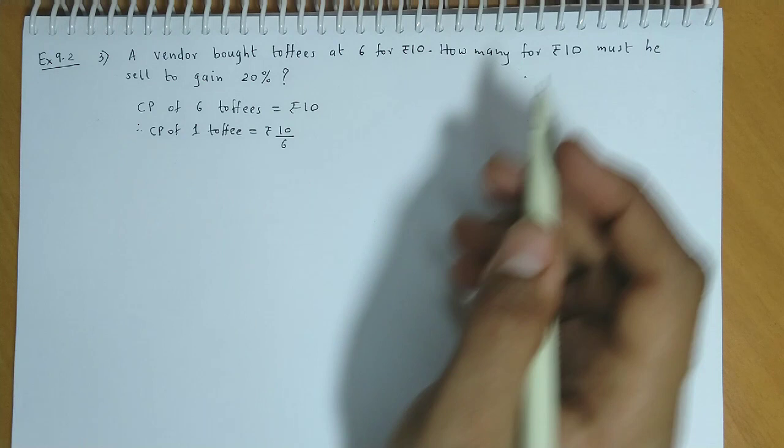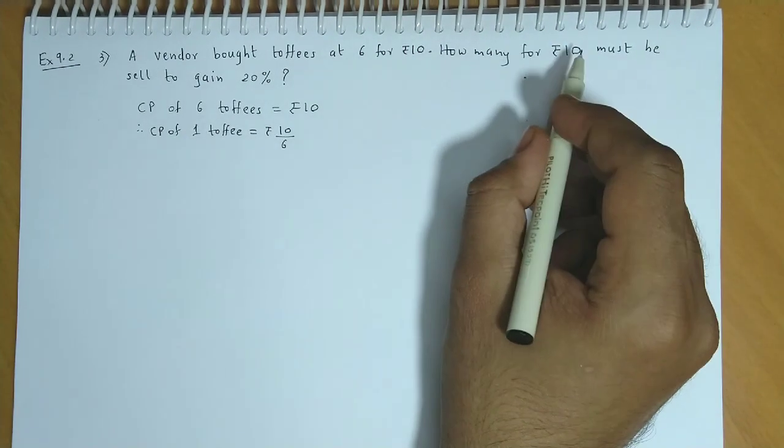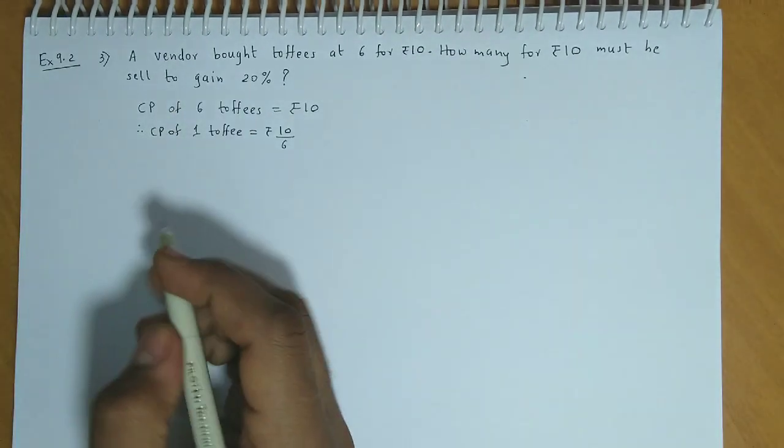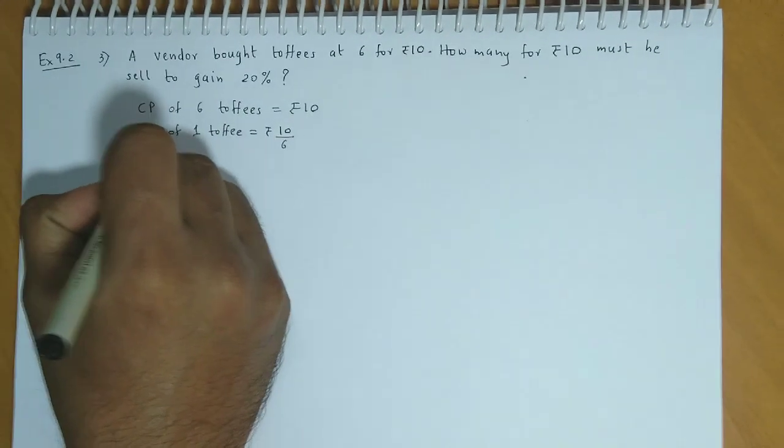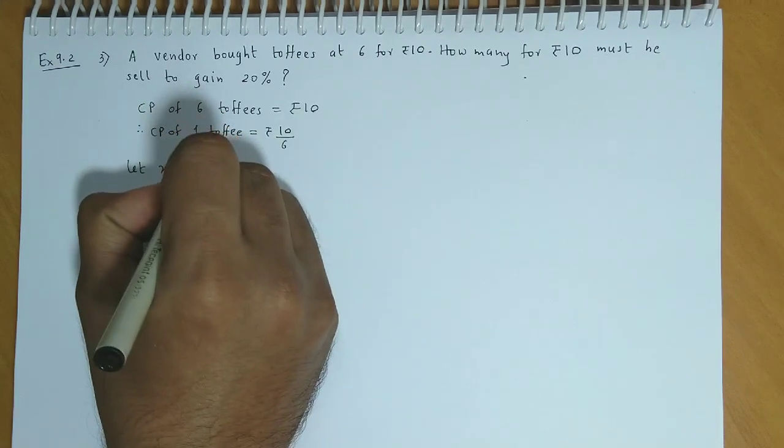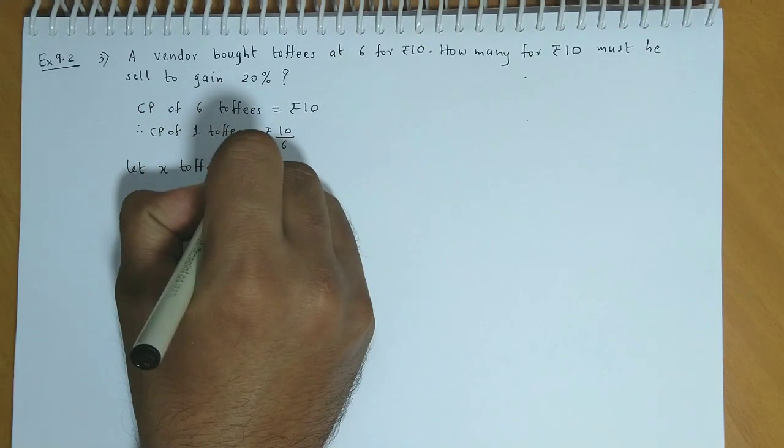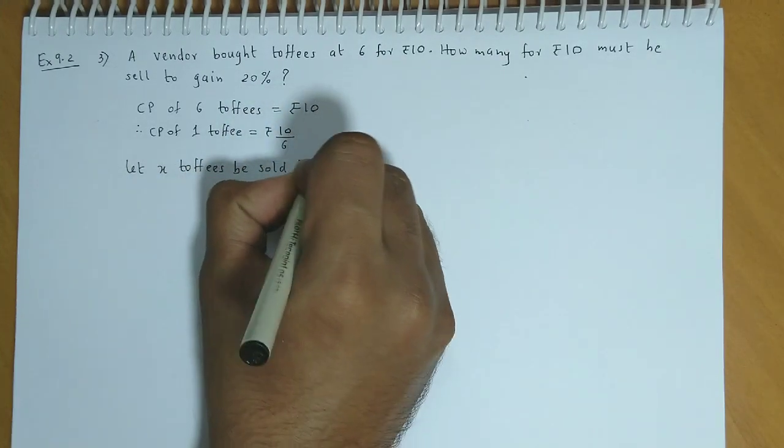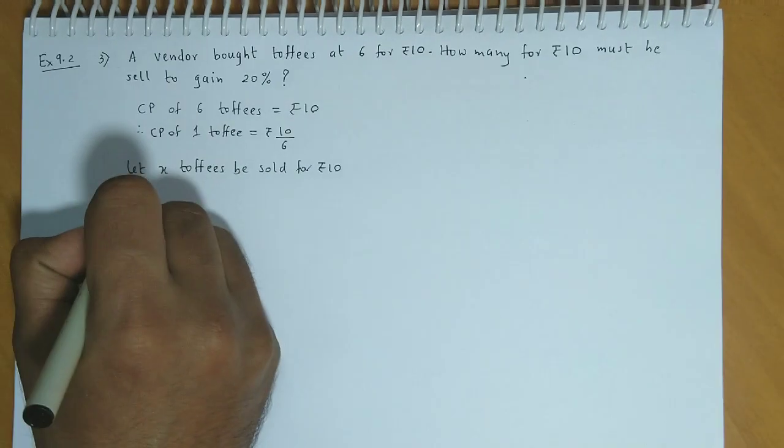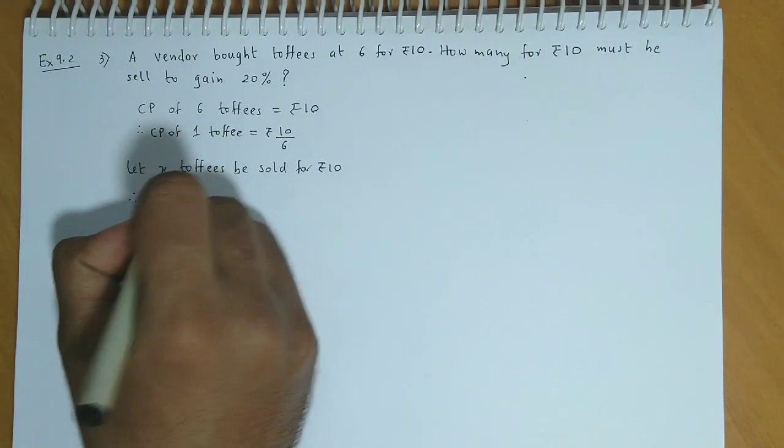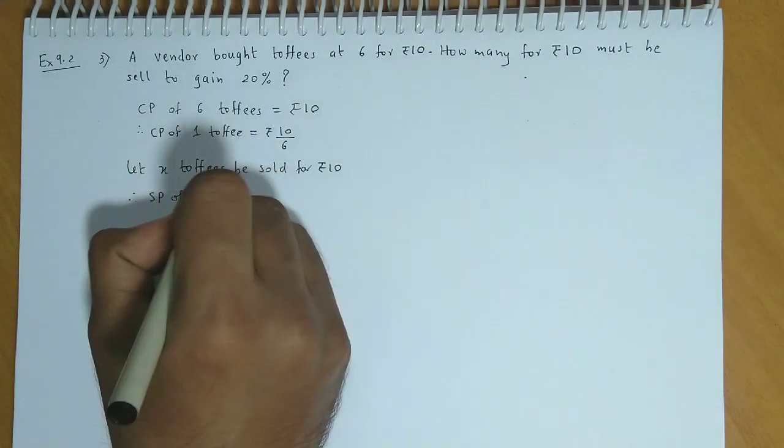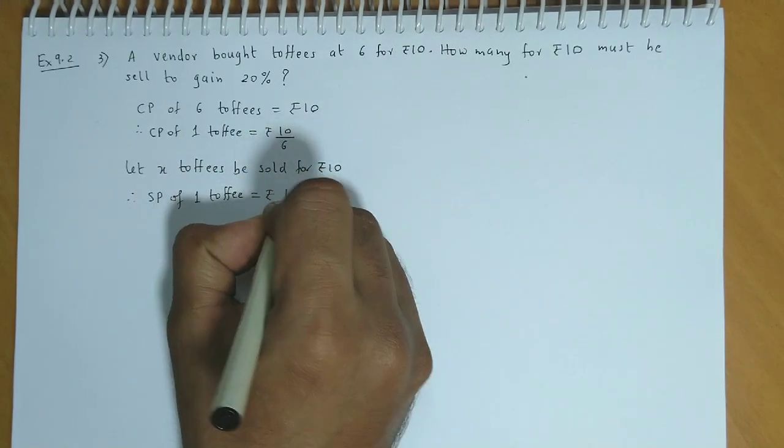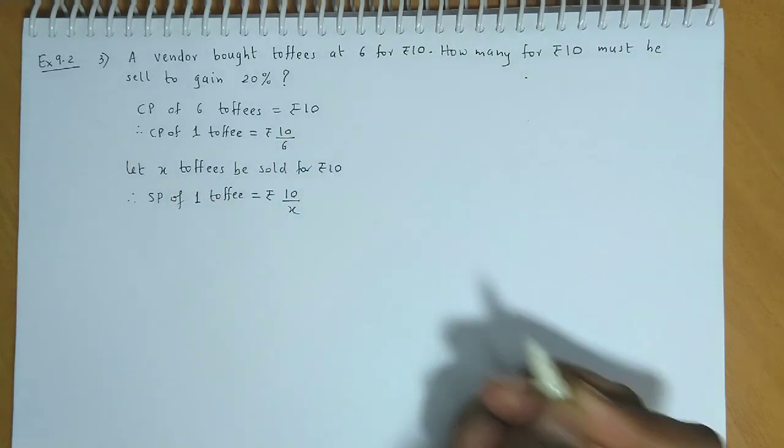We are asked how many for rupees 10 must he sell to gain 20% profit. Let X toffees be sold for rupees 10. Therefore, selling price of 1 toffee will be 10 divided by X.